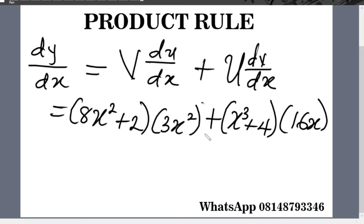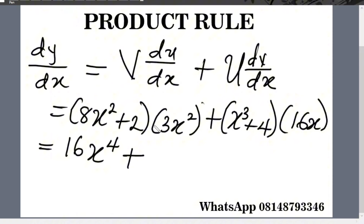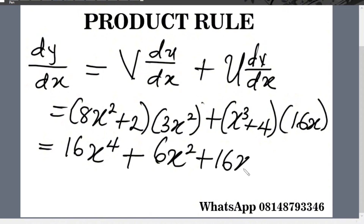If we expand these brackets, it gives us: 3x squared multiplied by 8x squared gives 24x to the power 4, plus 3x squared multiplied by 2 gives 6x squared, plus 16x multiplied by x cubed gives 16x to the power 4.